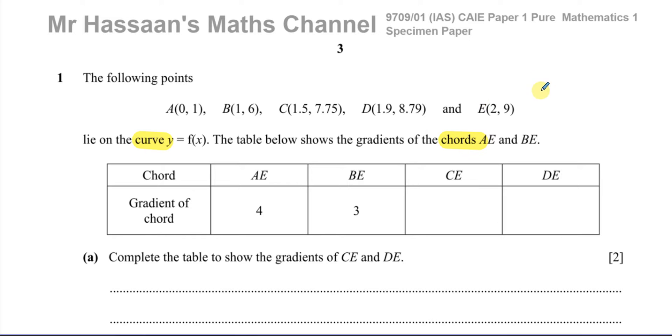First of all, we have a few words here that some of you might not understand. We have here a curve and we have these chords. So what is a chord in relation to a curve? A chord is a straight line that connects two points on the curve. So say this is for example E and this is A. This would be the chord AE, a straight line connecting those two points.